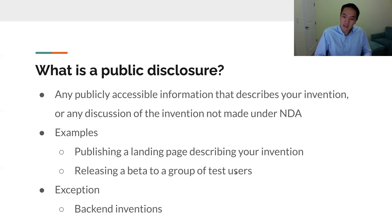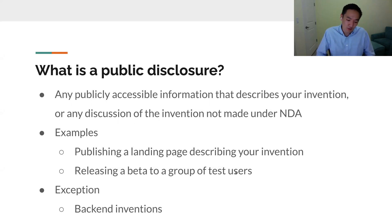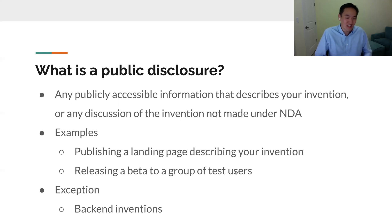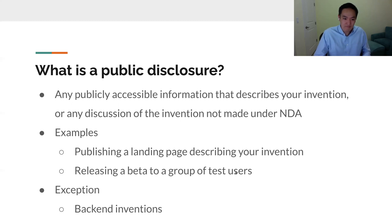There is a small exception with back-end inventions. For example, if the invention is a news feed — how you algorithmically rank different pieces of content — and users can't really tell how you're ranking it, then arguably it is not a public disclosure. There are some gray areas, but to be safe, you generally just want to file a patent before you publicly disclose it.